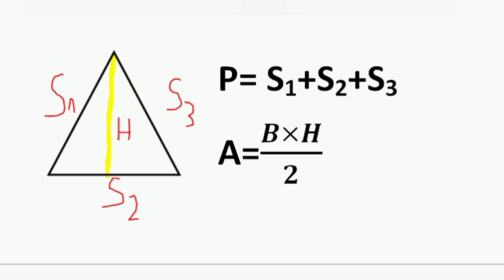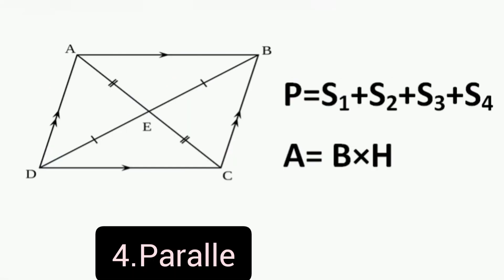Number 4: Parallelogram. Parallelogram is a simple quadrilateral with two pairs of parallel sides. The opposite sides are of equal length. Perimeter of parallelogram is equal to side 1 plus side 2 plus side 3 plus side 4. Area is equal to base times height.